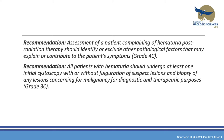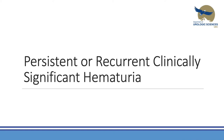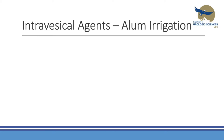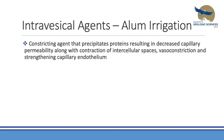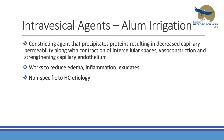The CUAJ best practice recommendation states that assessment of patients planning hematuria post-radiation should identify or exclude other pathologic factors that may explain or contribute to patient symptoms, and that patients with hematuria should undergo at least one initial cystoscopy with or without fulguration of suspected lesions and biopsy of any lesion concerning for malignancy, for both diagnostic and therapeutic purposes. Alum irrigation — aluminum ammonium sulfate or aluminum potassium sulfate — is one intravesical agent we use very often. These aluminum salts act as astringent agents that precipitate proteins, resulting in decreased capillary permeability, contraction of intercellular spaces, vasoconstriction, and strengthening of capillary endothelium.